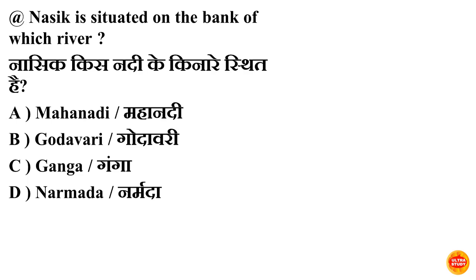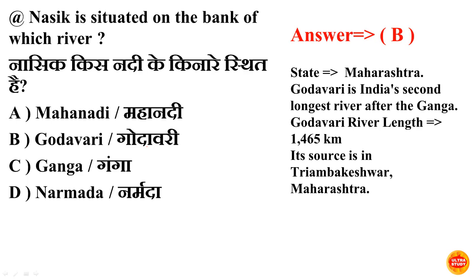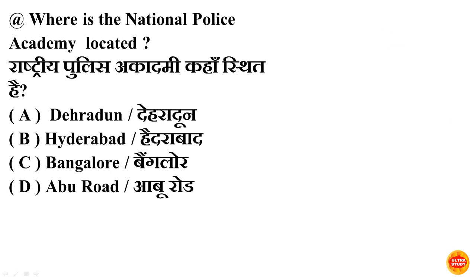Next question: Nashik is situated on the bank of which river? Nashik kis nadi ke kinare sthit hai? Option B is correct — Godavari. Nashik Godavari nadi ke kinare sthit hai aur Nashik Maharashtra mein sthit hai. Godavari Bharat ki second longest river after the Ganga hai. Godavari nadi ki length hai 1465 km aur Godavari nadi ka source hai Trimbakeshwar, Maharashtra.